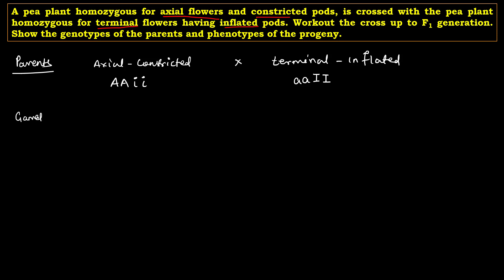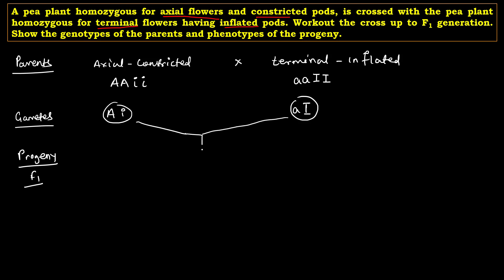From here you have to find the gametes, which are simple and straightforward. So we are going to have one type that is capital A, small i, and here small a, capital I — these are the gametes of these parents respectively. Coming to the progeny, the F1 generation is simply a combination of these two gametes fusing together, giving us capital A, small a, capital I, small i — a heterozygous condition.